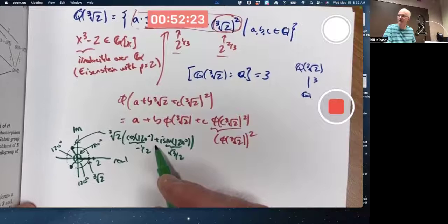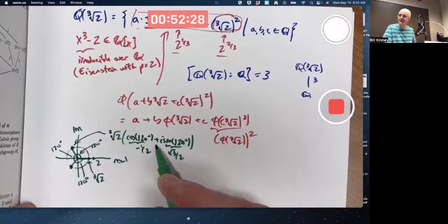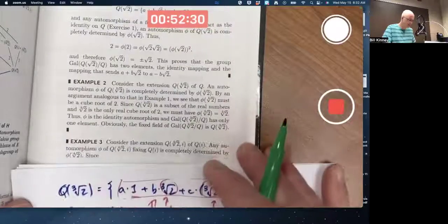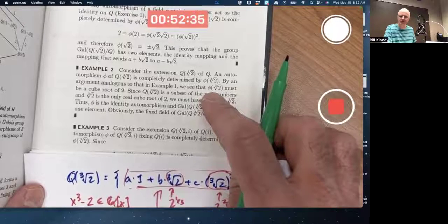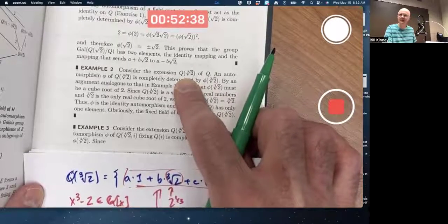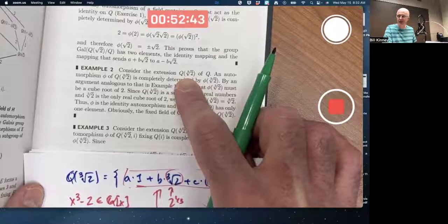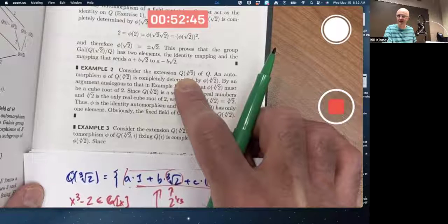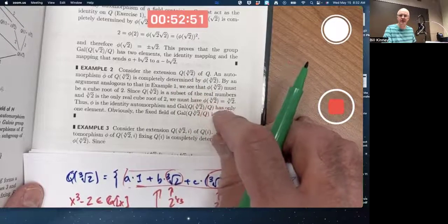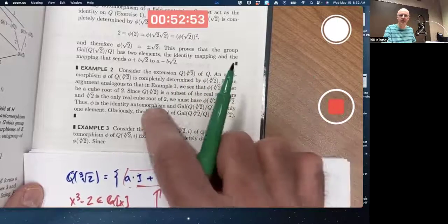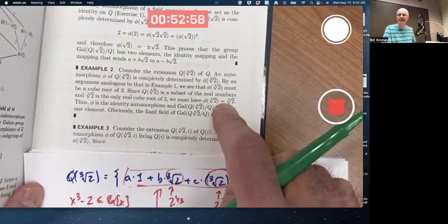Those are the other cube roots of 2, the other two numbers whose cube is 2. They're not real numbers. Therefore, they can't possibly be an output of phi of cube root of 2. Because phi of cube root of 2 is an automorphism from this field to itself which doesn't include any non-real numbers. So the value of phi of cube root of 2 must be the real cube root of 2 itself. There's only one real cube root of 2.